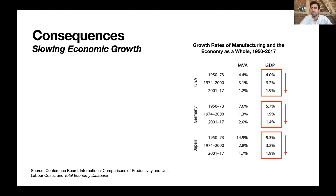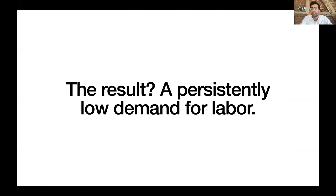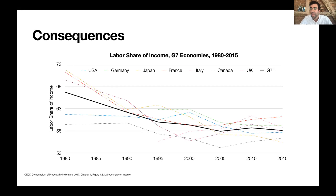Because productivity growth is a major component of output growth for the economy as a whole, we've seen GDP growth rates really fall over time. The result has been persistently low demand for labor — slowing economic growth, harder time creating jobs after recessions, and worsening bargaining positions for workers. Across the G7 countries, the labor share of income has been falling — another indicator of the general decline in demand for labor.